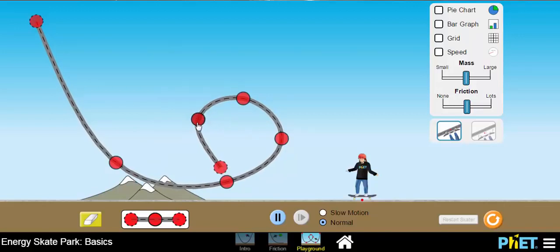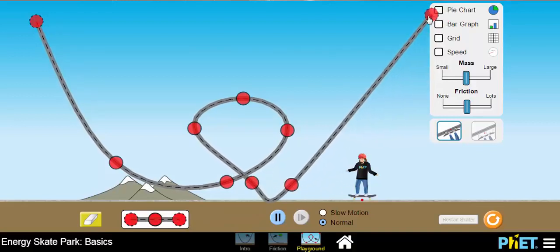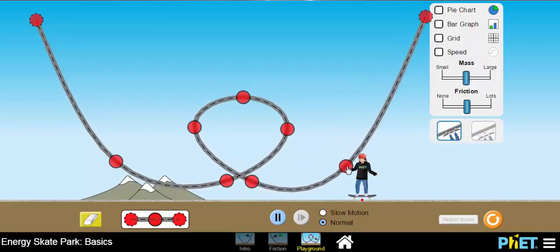You can tweak it, change the shape of that loop a bit if you need to. Something like that. And then we're going to get some more track in there. We'll keep stretching this thing out. And that looks like that'll work for now.